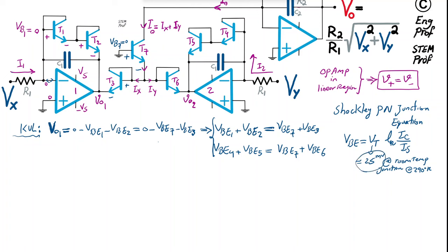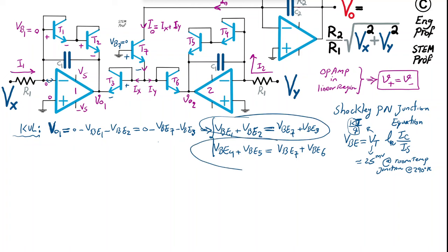We will substitute the Shockley equation into the two KVL voltage-sum equations. The key requirement is that all seven BJTs must be properly matched — ideally fabricated on the same substrate — so that IS and VT are identical for all transistors.